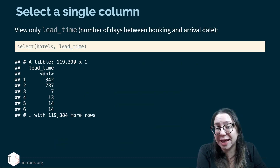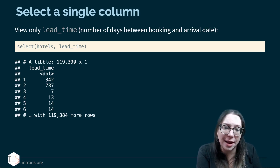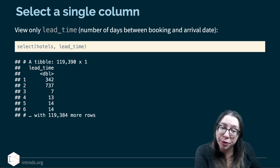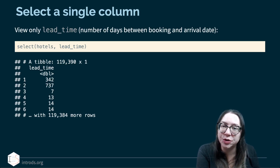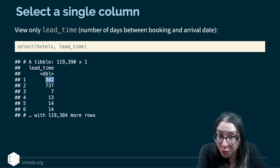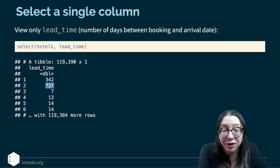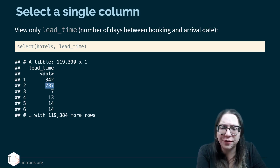Suppose I wanted to select a single column — the lead_time variable, which is the number of days between booking and arrival date. Think about how far in advance you used to book hotels. The first booking was made 342 days prior to arrival — almost a year. The second booking was made 737 days prior — almost two years.